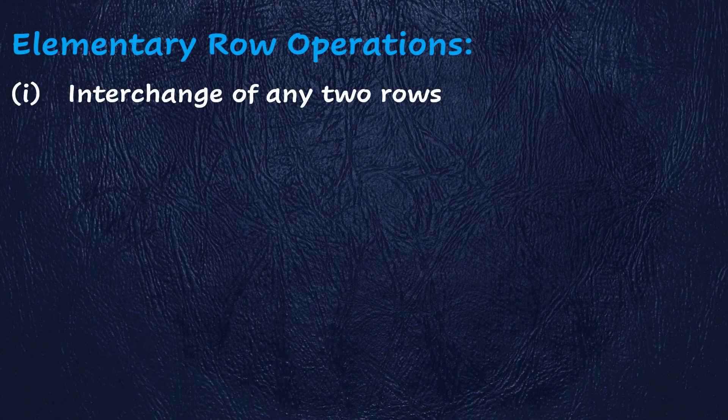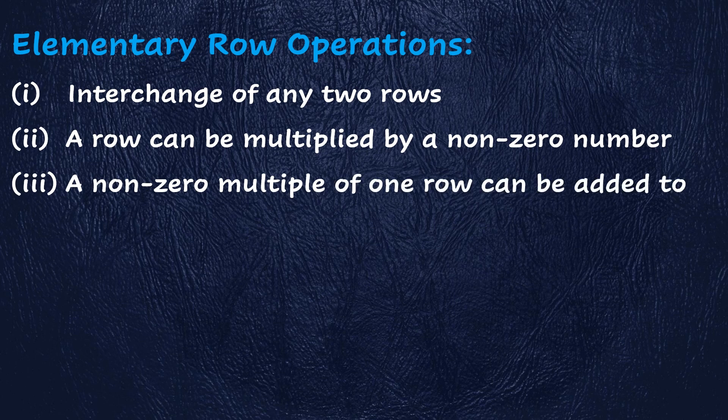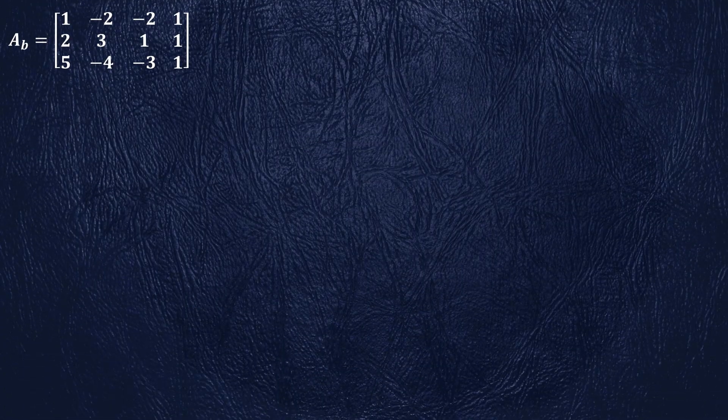Let's have a glance at elementary row operations. The first one is interchange of any two rows. The second is a row can be multiplied by a non-zero number. And third, a non-zero multiple of one row can be added to another row.